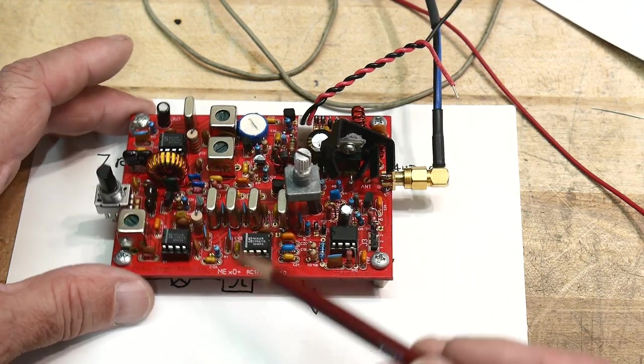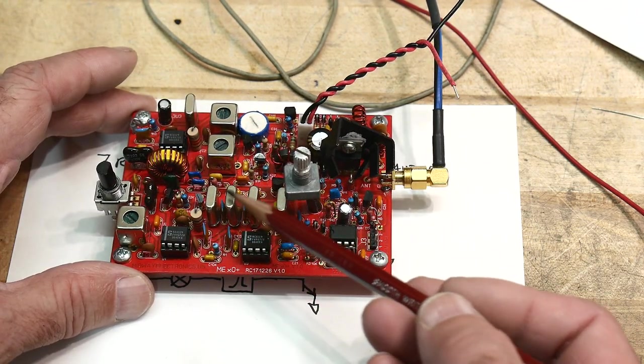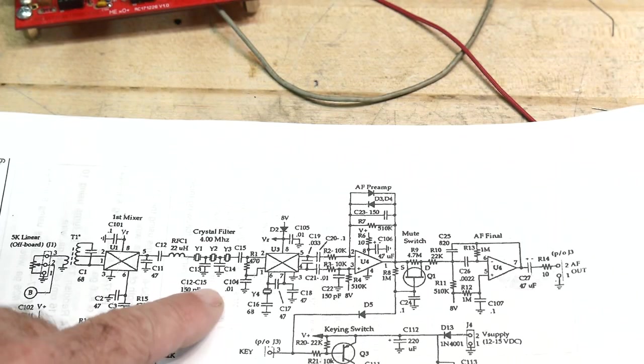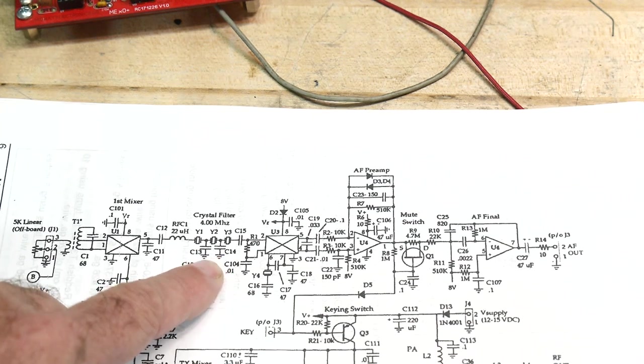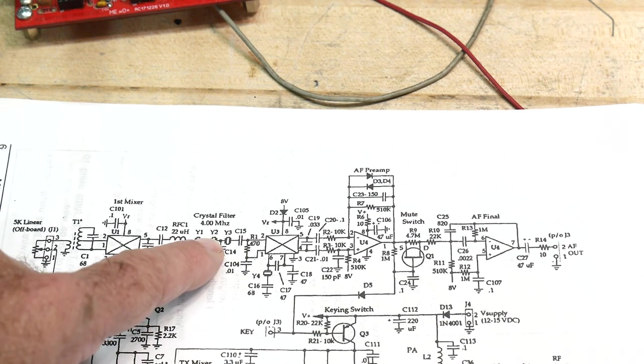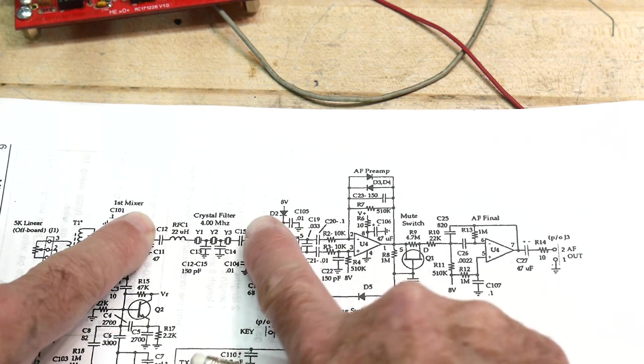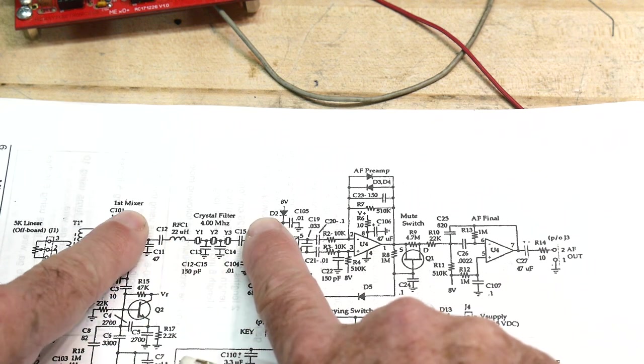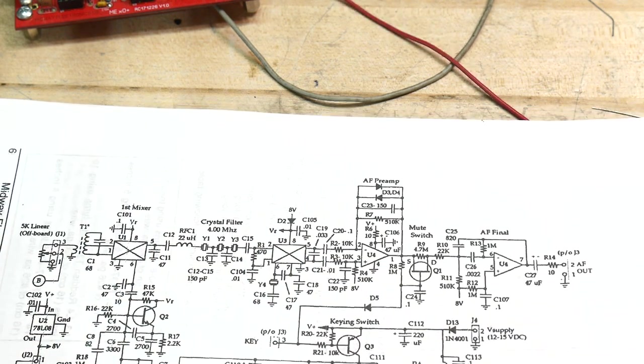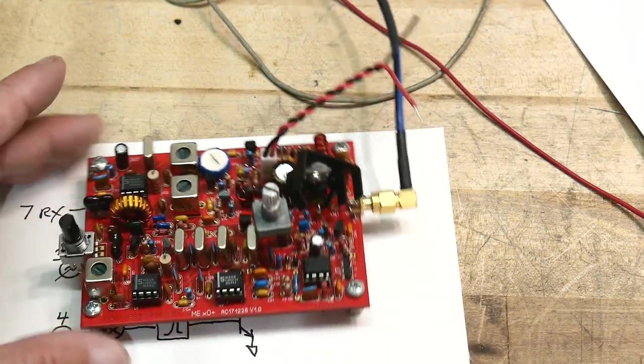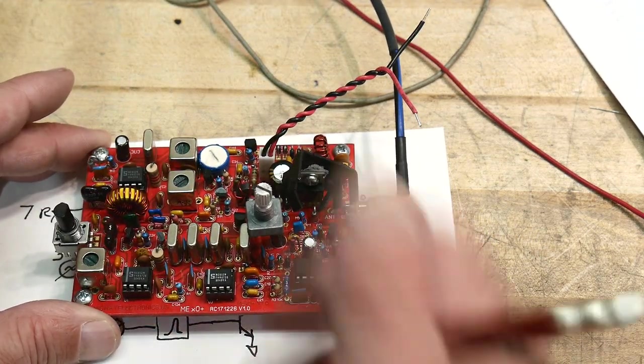I went over that in a video, how to design crystal lattice filters. If you take a look at the schematic, here it is: crystal, capacitor, crystal, capacitor, crystal, and then capacitors on the input and output. So 3 crystals and 4 capacitors. You just need 4 matching crystals, or 5 altogether.